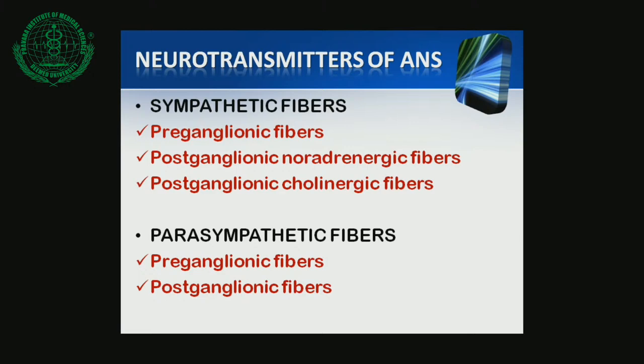Coming to the neurotransmitters of the ANS: Sympathetic pre-ganglionic fibers secrete acetylcholine. Post-ganglionic sympathetic fibers supplying sweat glands, blood vessels, and skeletal muscle also produce acetylcholine. Parasympathetic pre-ganglionic fibers secrete acetylcholine, and parasympathetic post-ganglionic fibers also secrete acetylcholine. Acetylcholine at ganglia utilizes the nicotinic receptors.